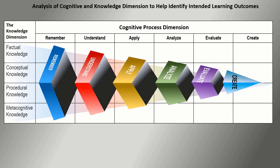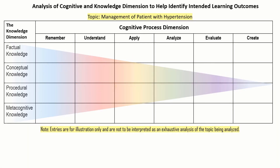Let's use a specific topic: management of patients with hypertension. If you start by formulating terminal competencies — asking what will they be able to do at the end of the course — that will be at the level of Create. For example, they will be able to prepare a follow-up plan or create a management plan. But they cannot arrive at that level without first remembering facts like normal blood pressure or anatomy of the cardiovascular system.